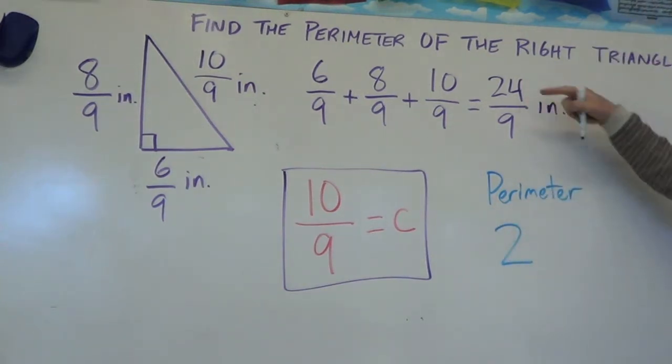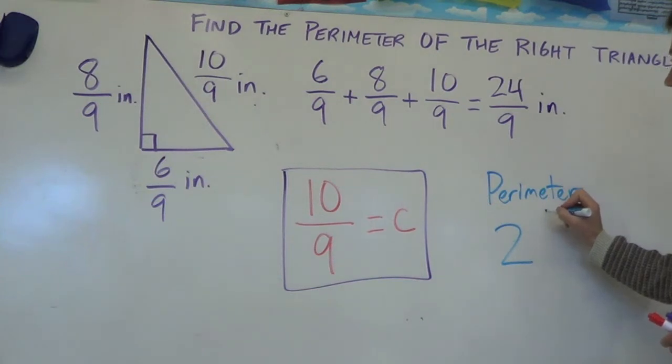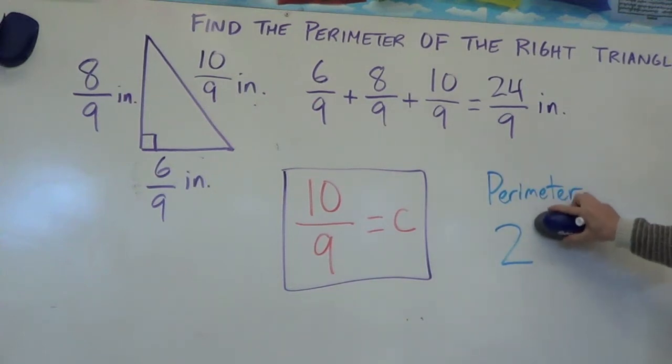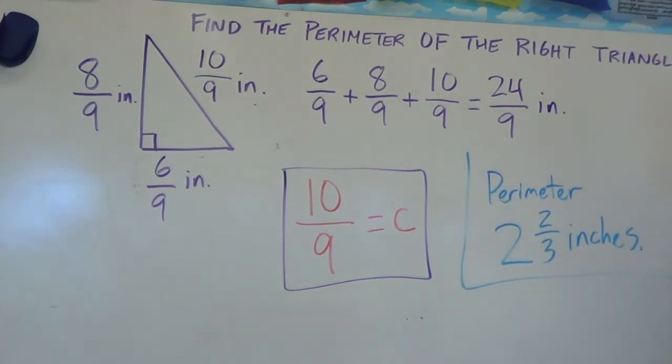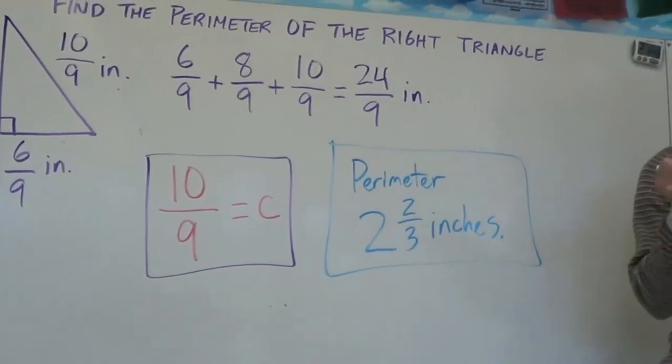And then that gets us to 18. We have a leftover of 6 ninths, which we'll simplify to 2 thirds. So the perimeter of this right triangle is 2 and 2 thirds inches.